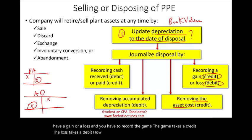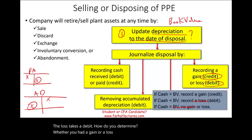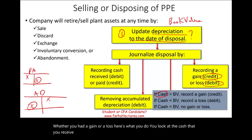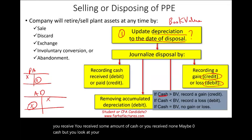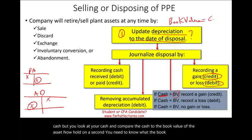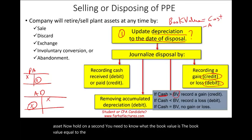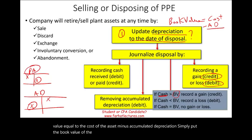How do you determine whether you had a gain or a loss? You look at the cash that you received — some amount or possibly zero — and compare it to the book value of the asset. The book value equals the cost of the asset minus accumulated depreciation. Simply put, the book value is the plant asset cost minus its accumulated depreciation.